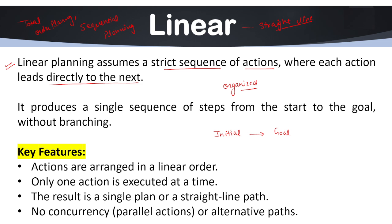Now we have some features of linear planning in AI. The first feature is actions are arranged in a linear order. Only one action is executed at a time. This particular feature is very important. Another is the result is a single plan or a straight line path. The next feature is no concurrency or alternative paths. Concurrency means duplicacy, so there is no duplicacy. There is no alternative path to achieve the goal. We just have to follow the sequential path to achieve our targeted goal.